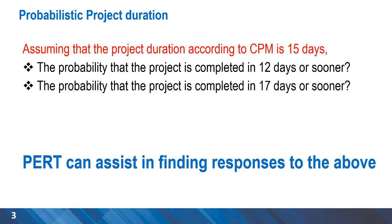For projects, we can determine the completion time using the Critical Path Method. An example here is a project with 15 days for completion. But we are interested in understanding the probability of completing the project sooner — for example, 12 days or sooner — and also the probability of completing the project in 17 days or sooner.